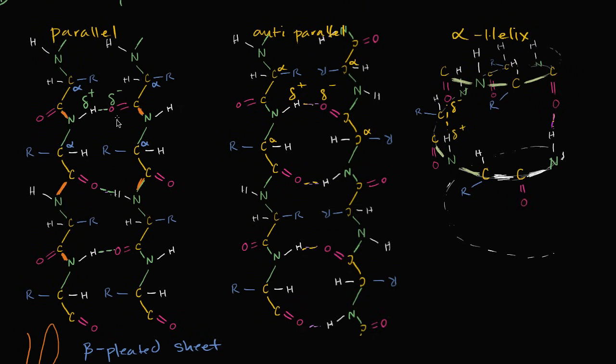We talked about the parallel beta pleated sheets. And over here, I have two backbones. They're oriented in the same direction. Nitrogen, alpha carbon, carbonyl carbon. And I just drew the side chains as these generic R groups. And what we saw is you could have hydrogen bonding between these backbones. And that was a parallel beta pleated sheet.